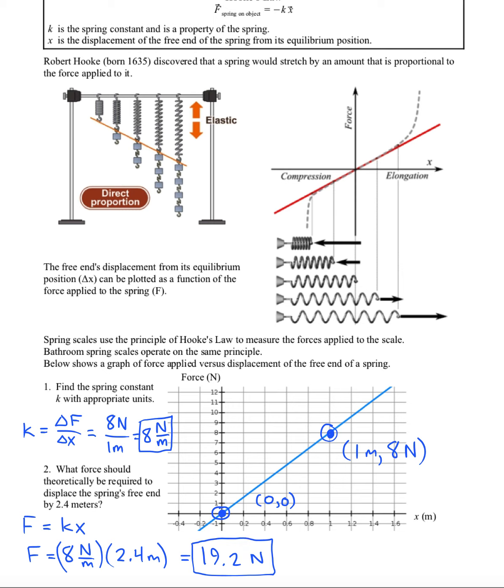Now, for all real springs, there will come a point where the proportional nature of the graph, the linear nature of it, breaks down. For example, the spring is only so long, and you can't stretch it beyond a certain point. And we see that stretching it toward its limit requires a rapidly increasing amount of force.